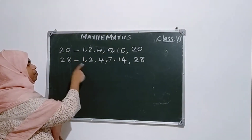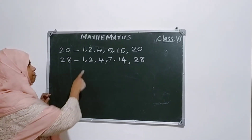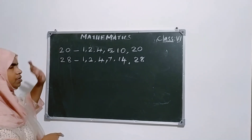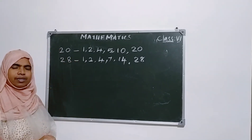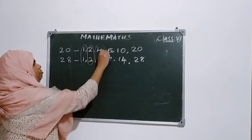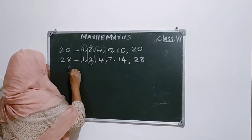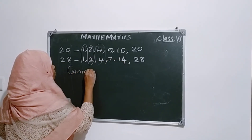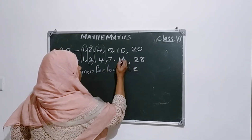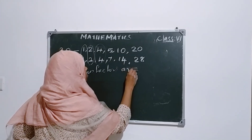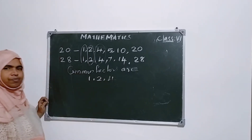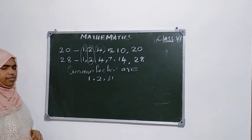Then, what are the common factors? Set these two factors — factors of 20 and 28 — and find any common ones. Common means here 1, 2, 4. So the common factors are 1, 2, and 4. These are the common factors.